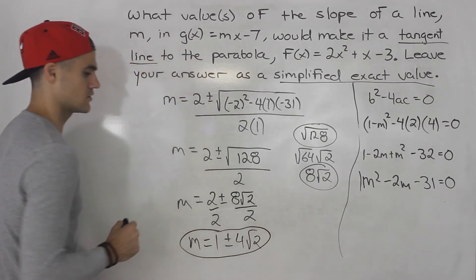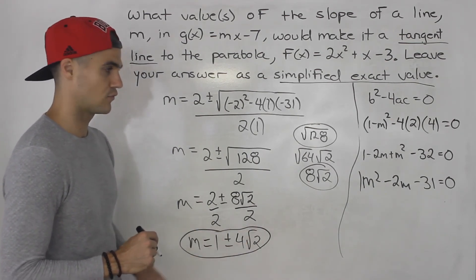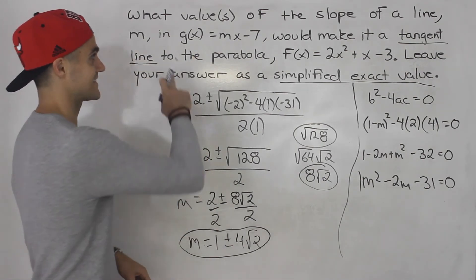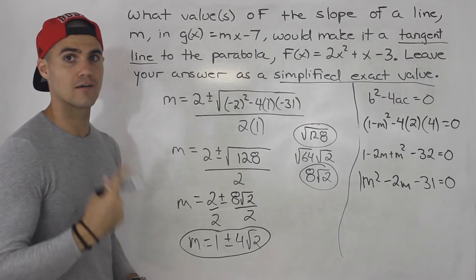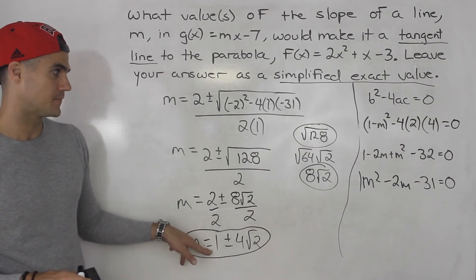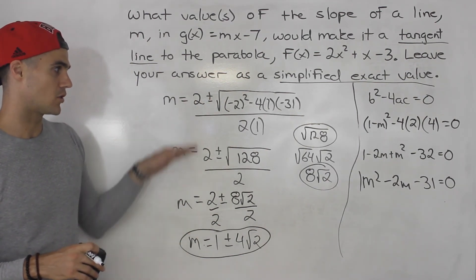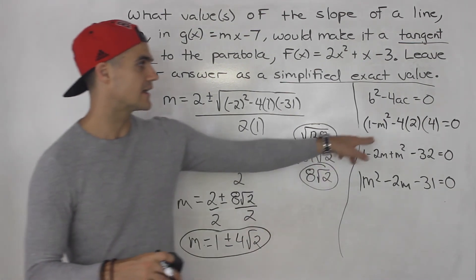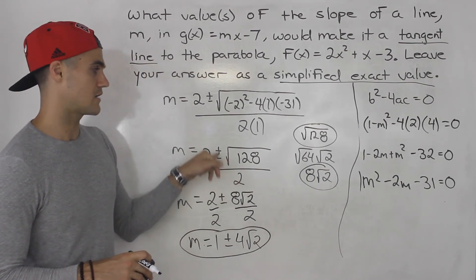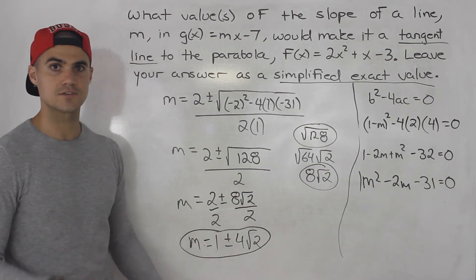And that is your simplified answer: m = 1 + 4√2 or m = 1 − 4√2. Those are the values for m that would make this line tangent to that parabola — having one point of intersection. It's a pretty tough question to get to this ending point. The algebra is quite difficult, especially getting that b value of (1 − m) and simplifying the radical. Those are your two final answers for m.